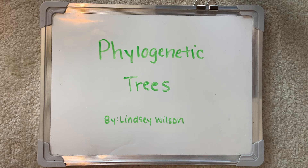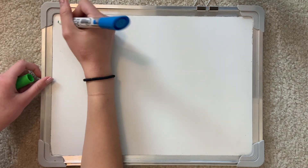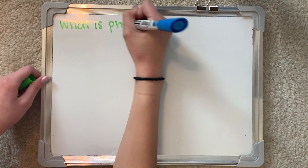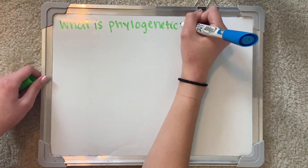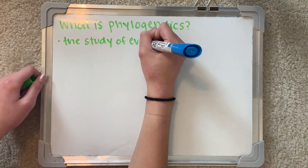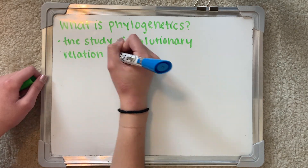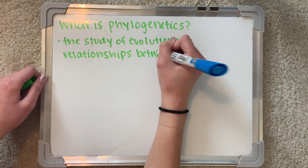Hi everyone, my name is Lindsay Wilson and today we're going to be talking about phylogenetics and phylogenetic trees. Let's begin by answering the question: what is phylogenetics? It's basically the study of evolutionary relationships between organisms, often by comparing species or populations.